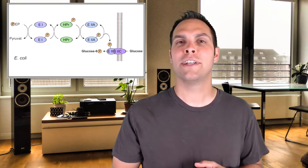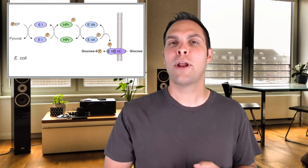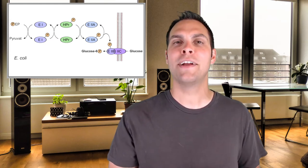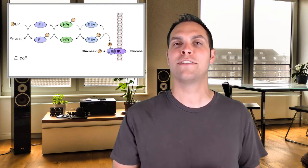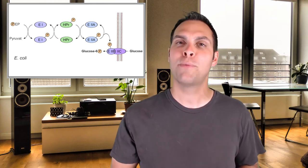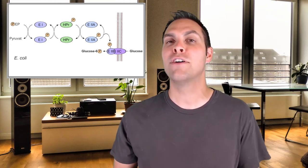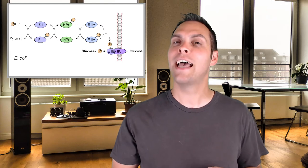Another form of primary active transport is group translocation, found mainly in bacteria, plants, and archaea. Group translocation often doesn't use ATP as an energy source. For example, the phosphotransferase system in bacteria uses phosphoenolpyruvate as an energy source to bring sugar molecules like glucose and fructose into the cell — moving them from low concentration outside to high concentration inside, working against the chemical gradient.